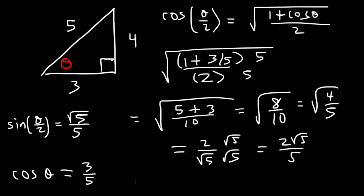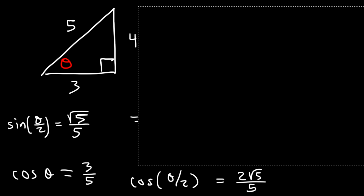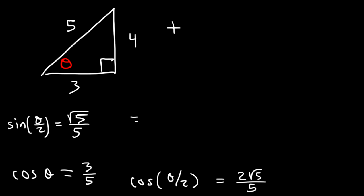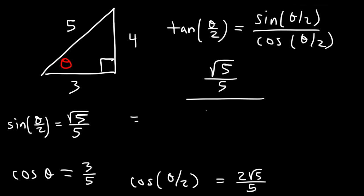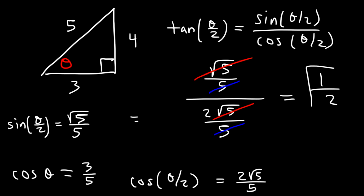So we have 2 divided by root 5, which rationalizes to 2 root 5 over 5. That's cosine(θ/2). Now that we have sine and cosine, we can find tangent(θ/2) as sine(θ/2) over cosine(θ/2). Sine(θ/2) is root 5 over 5 and cosine(θ/2) is 2 root 5 over 5. The root 5 and 5 cancel, leaving 1/2.